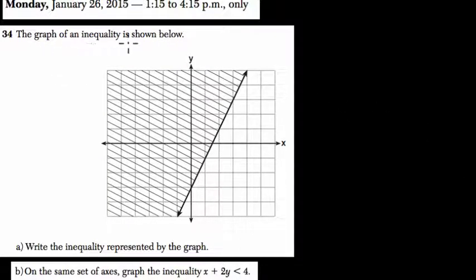It says the graph of an inequality is shown below. So you can see here that we've got this line. I notice that it's a solid line and not dashed, and that tells me right away that my inequality is going to involve either less than and equal to or greater than or equal to because we can include points on this line.